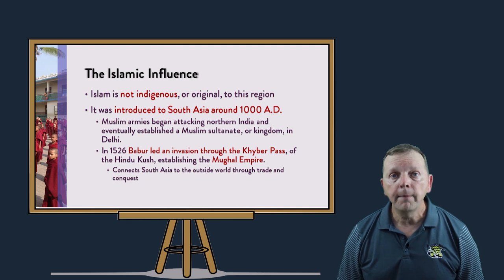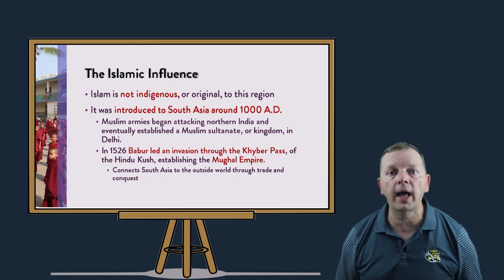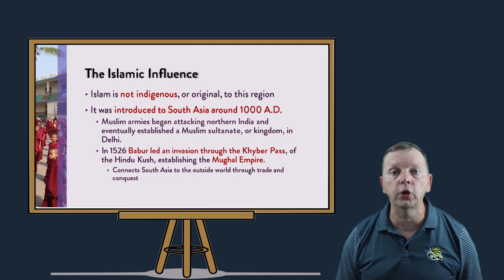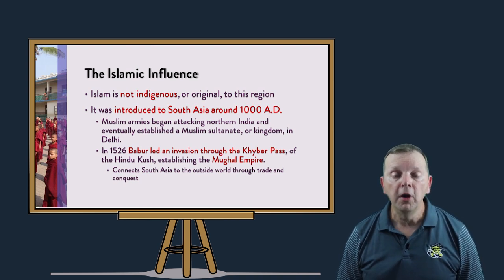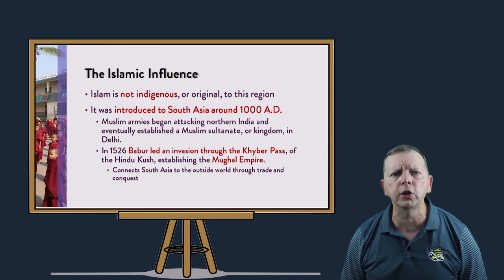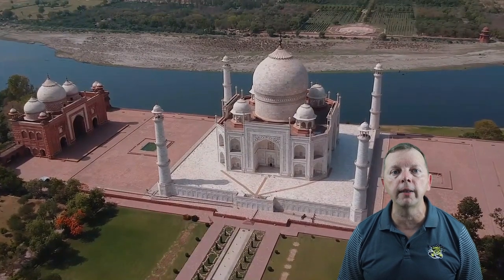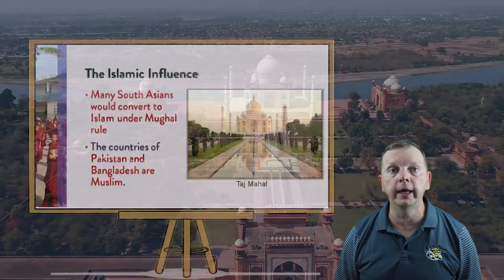In 1526, Babar led an invasion through the Hindu Kush mountains into South Asia and established the Mughal Empire. The Mughal Empire was Muslim but didn't force people to convert. However, it has been important to the culture of India. The Mughal Empire is responsible for giving India one of its most important cultural landmarks — the Taj Mahal. The Mughal Emperor Shah Jahan built the Taj Mahal as a place where he could bury his favorite wife. Today, over 8 million people a year visit this site.